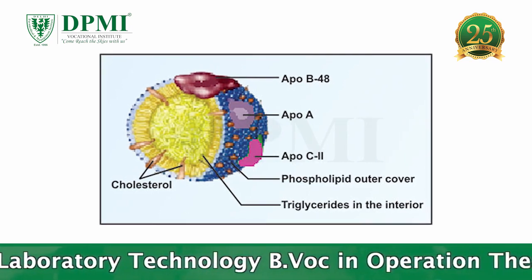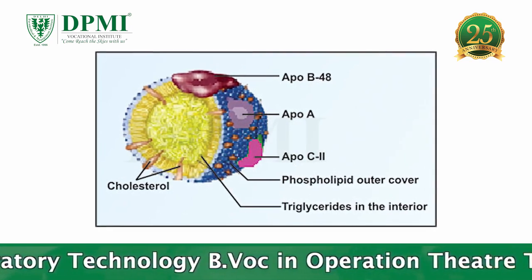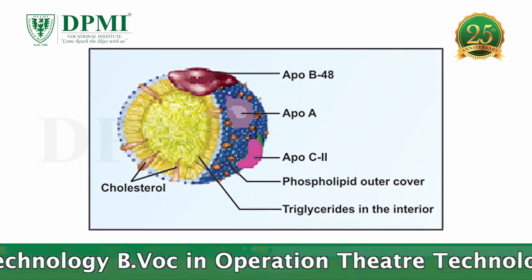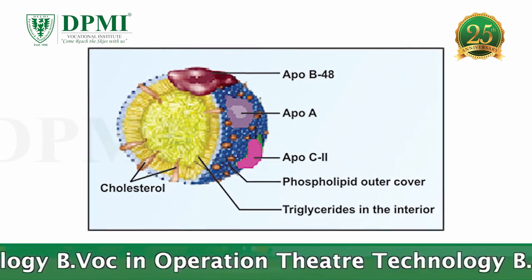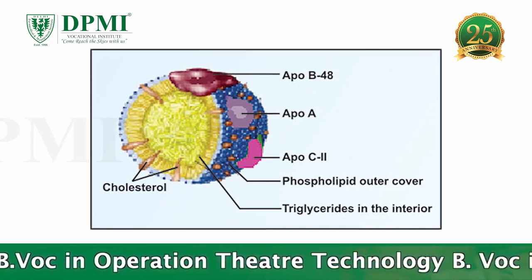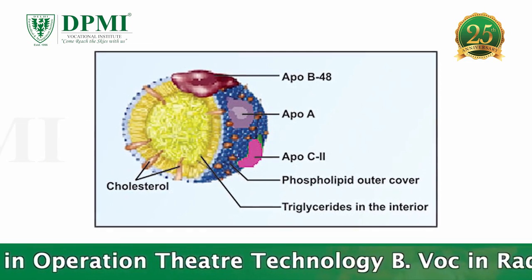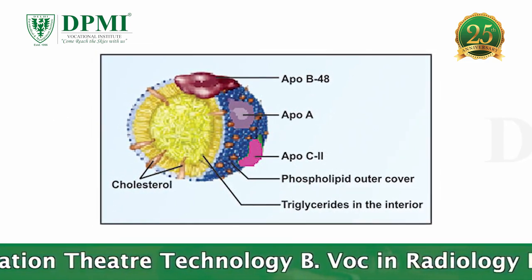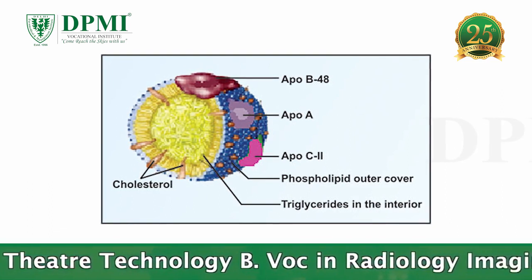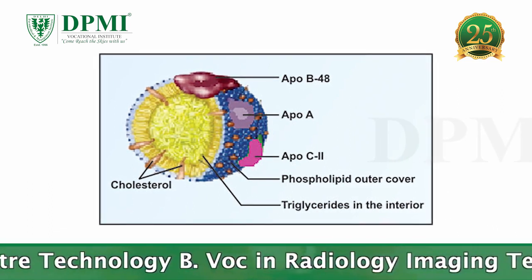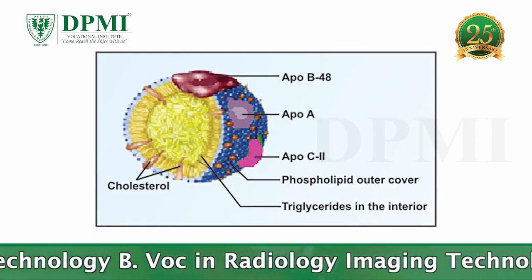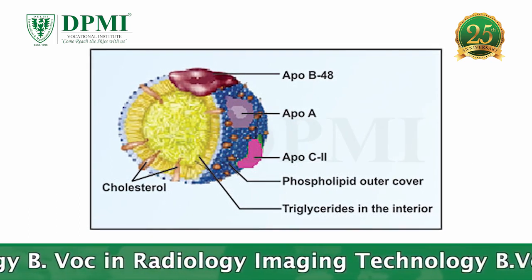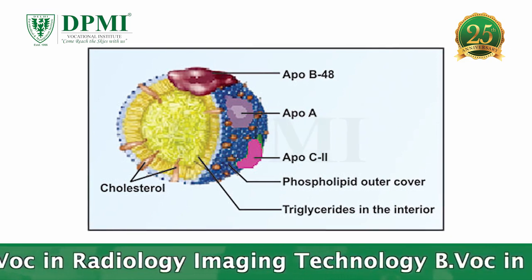Chylomicrons: These are large triglyceride-rich particles made by the intestine, which are involved in the transport of dietary triglycerides and cholesterol to peripheral tissues and liver. These particles contain apolipoprotein A, B48, C2, C3, and E. ApoB48 is the core structural protein that each chylomicron particle contains.